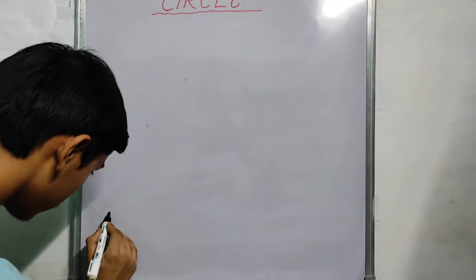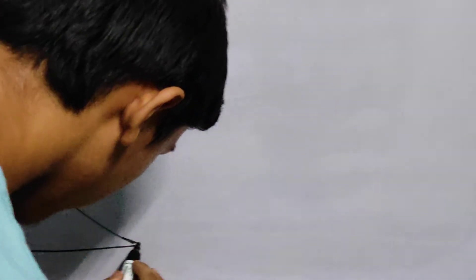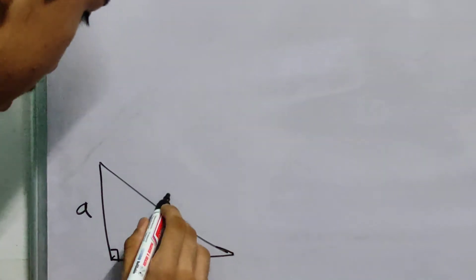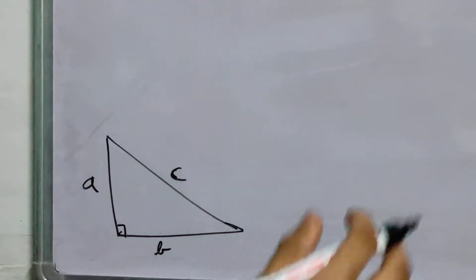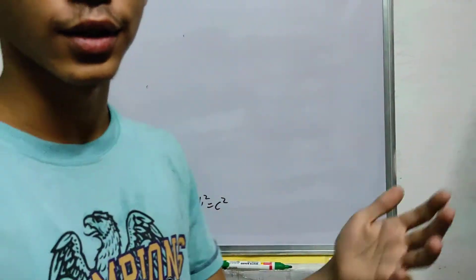If I draw a right-angled triangle and mention this A, B, and C, which result comes to our mind first? A square plus B square is equal to C square, right? The well-known Pythagoras' theorem.